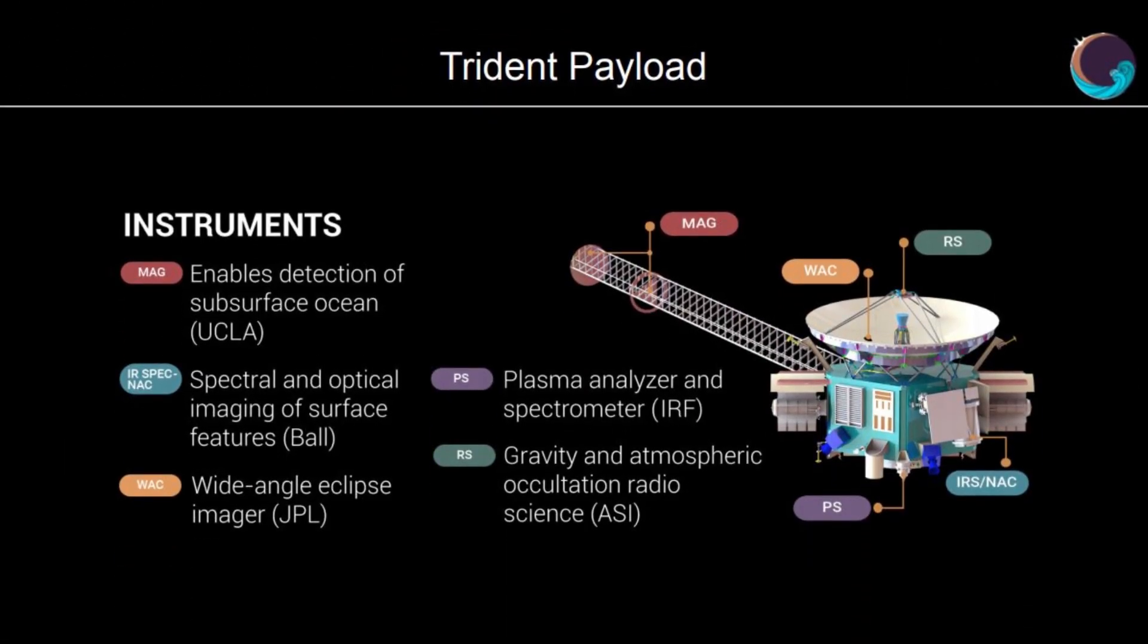The mission's instruments include an infrared spectrometer for compositional mapping, a narrow-angle camera for regional mapping, a wide-angle camera for imaging and change detection, a triaxial magnetometer for ocean detection, radio science equipment for atmospheric observations, and a plasma spectrometer for studying atmospheric charged particles.